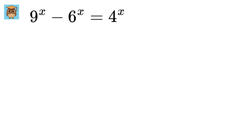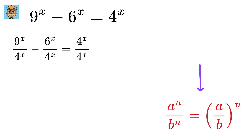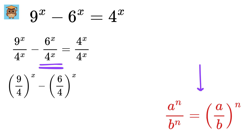As a first step, let us divide all of these by 4 raised to the power of x. Next, we can use this power rule to get this as 9 by 4 raised to x, this as 6 by 4 to the x, and this as 1.